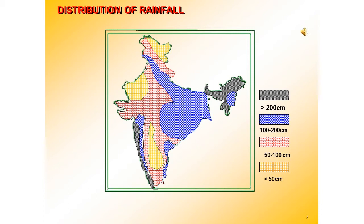This is a map of the distribution of rainfall. You can see the legend: the grey areas are more than 200 cm, the blue areas are 100 to 200 cm, the red ones are 50 to 100 cm, and the yellow areas are less than 50 cm. In map work we have 400 and we have less than 50.